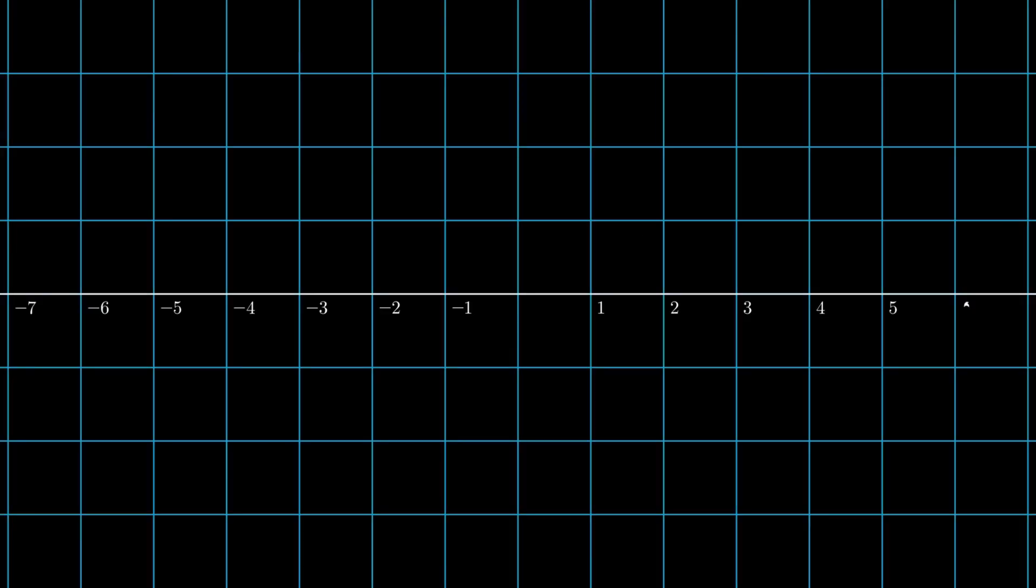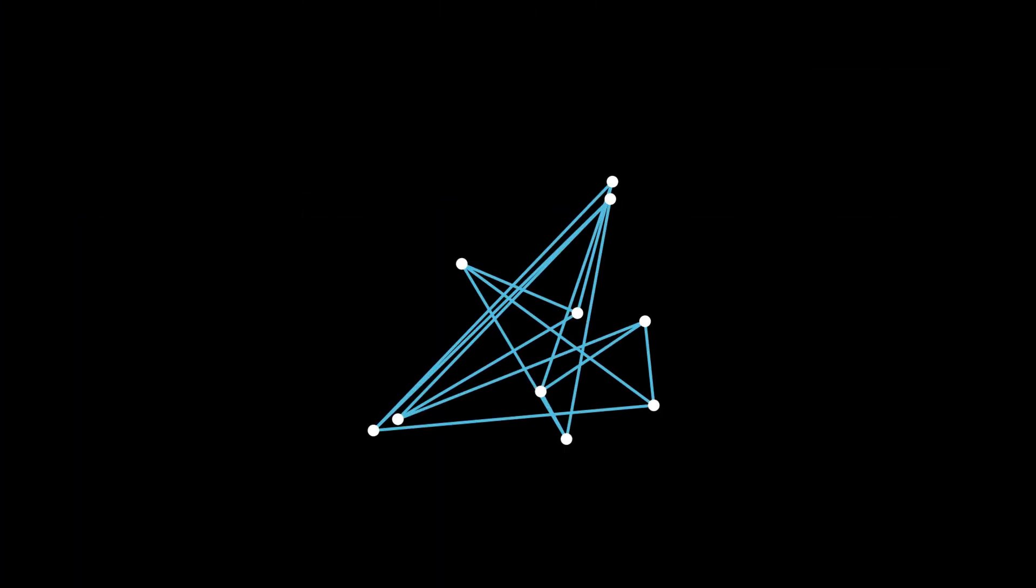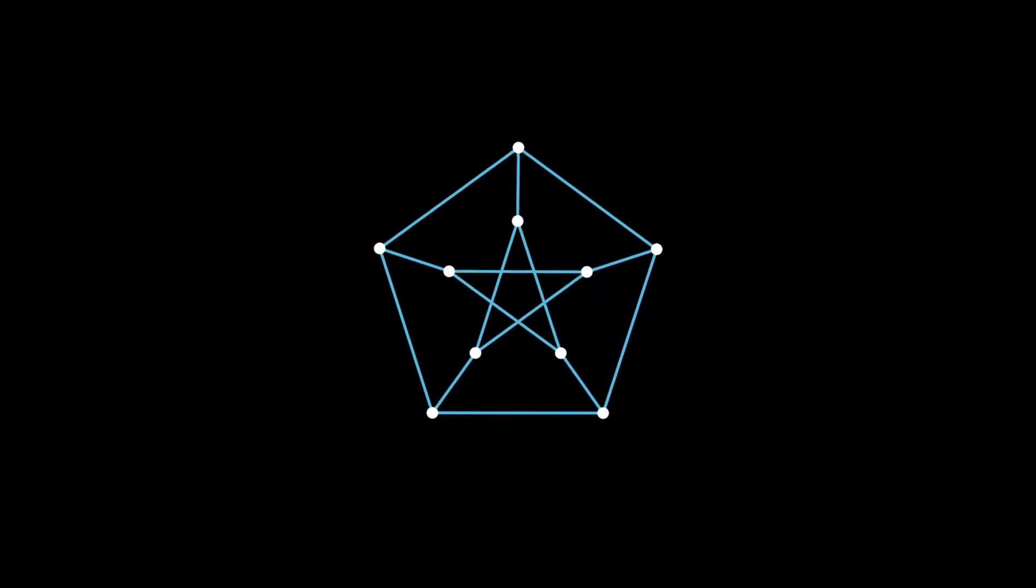Graph theory has a naming convention that I'm not too fond of, because a graph is both a plot of a function, like you're seeing now, and this. These graphs should probably be called something else, like networks or nets or something, but I guess that's just something we'll have to deal with.